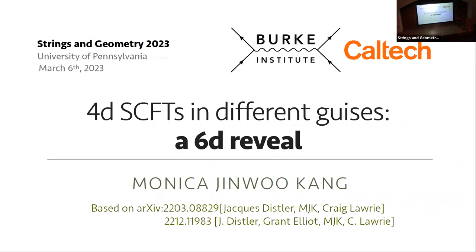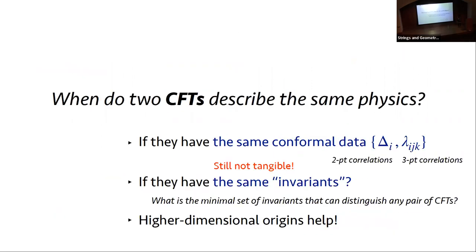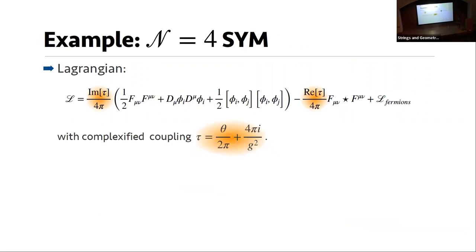That's the goal of today, which is why I'm flashing the title again: 4D theories in different guises. We're going to find 4D SCFTs that seemingly look like very different things, but use a 6D reveal — utilizing higher-dimensional origins to help answer these questions and find when they are actually describing the same physics. I'm going to use superconformal field theories today, because adding supersymmetry makes things more tangible, and specifically we'll go to N=2 theories.